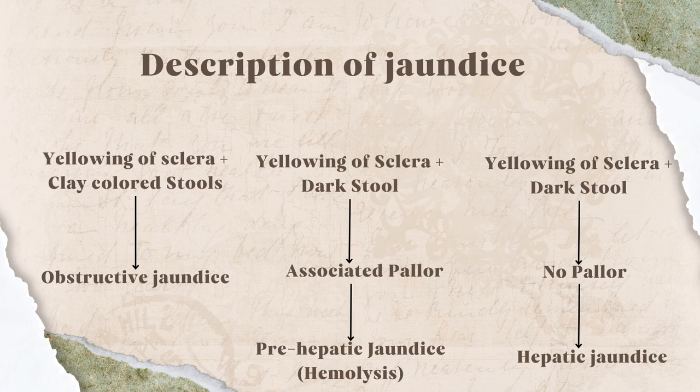If the patient has yellowing of sclera and clay-colored stool, that means obstructive or post-hepatic jaundice. If there is yellowing of sclera but stool color is normal or dark and there is associated pallor, that means the patient is both anemic and jaundiced — most likely pre-hepatic jaundice with hemolysis. If there is yellowing of sclera and dark stool but no pallor, the patient may be having hepatic jaundice.